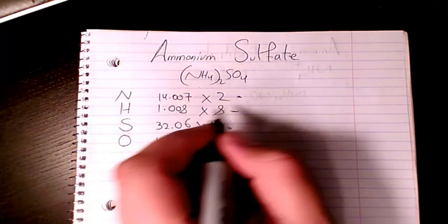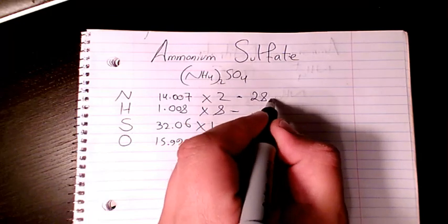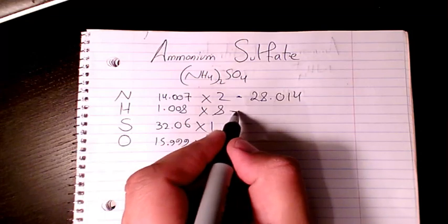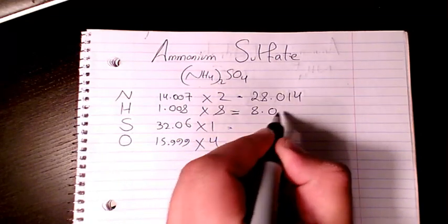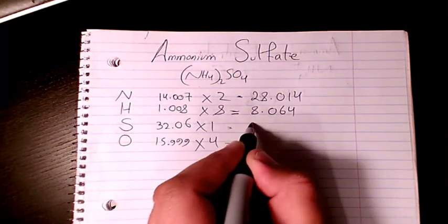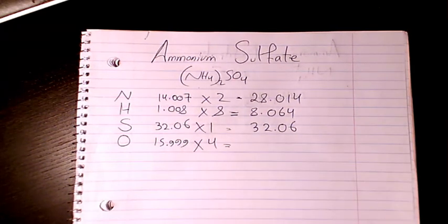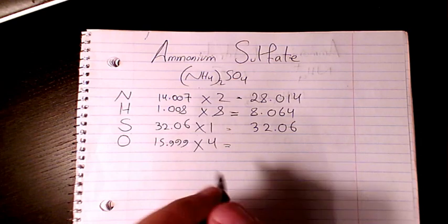Eight times 1.008 will be 8.064. One times 32.06 is 32.06. And four times 15.999 is going to be 63.996.